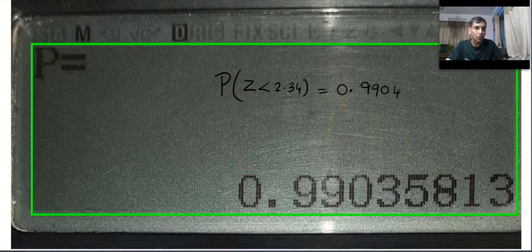So this is the value, as simple as this. Can you see? Probability of z less than 2.34 is equal to 0.9904, because normally we round off to four decimal places.